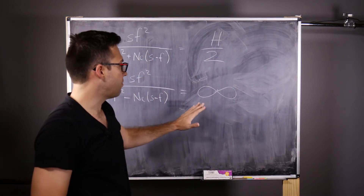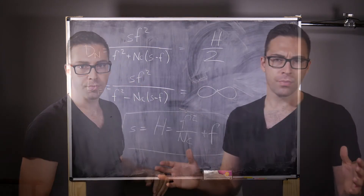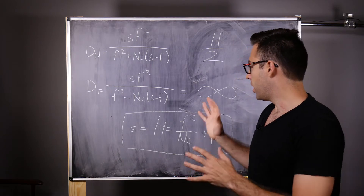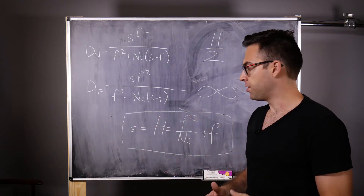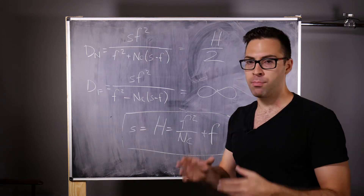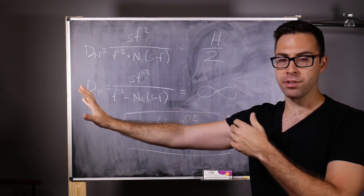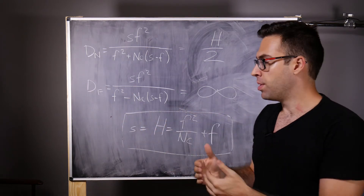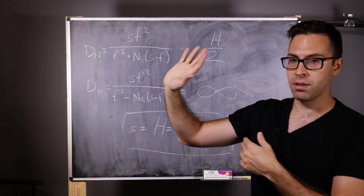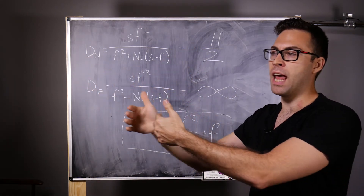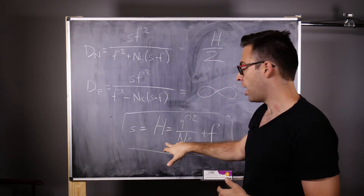This gives us the most depth of field for any given focal length and aperture combination. A lot of people may think that if you just focus your lens to infinity, you'll get everything in the background in focus. But that's not necessarily true. If you extend your lens to infinity, you'll get everything from infinity onward in focus, but you won't get as much of the foreground as if you focus at H, the hyperfocal distance.